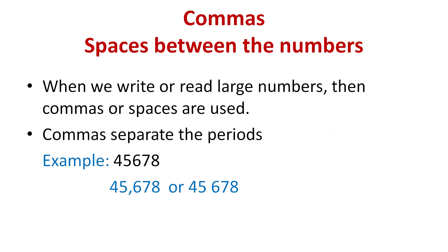Now let's talk about commas. Commas help us to read big numbers easily. Commas separate the periods. In some books, instead of commas, numbers are separated by spaces. Here we have the example 4, 5, 6, 7, 8. These three numbers — 6, 7, 8 — live in the ones house, and these two — 4, 5 — live in the thousands house. So we use a comma after three digits to separate the houses. Or you can just leave a space between the two periods.